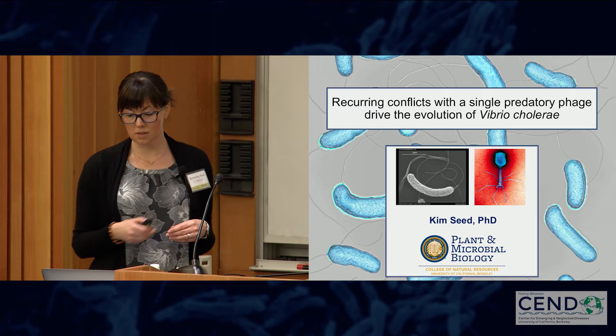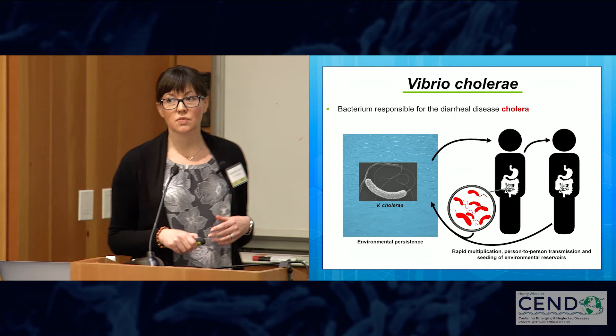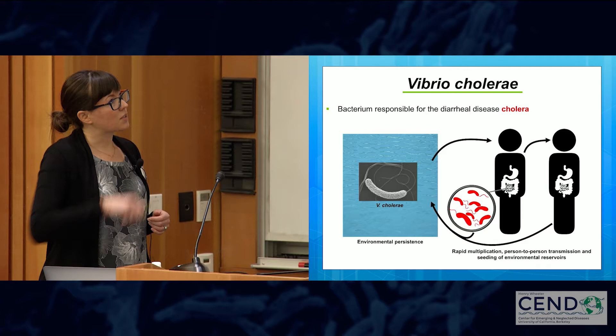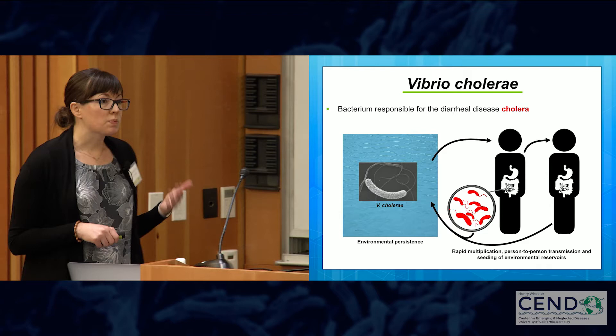Vibrio cholerae is a gram-negative facultative pathogen that lives in aquatic reservoirs and can emerge to cause disease in humans following the consumption of contaminated food or water. Upon ingestion, the organism colonizes the small intestine, where it replicates to very high levels in a very short period of time and produces key virulence factors, including cholera toxin, which is responsible for the severe diarrhea that follows severe cholera infection.